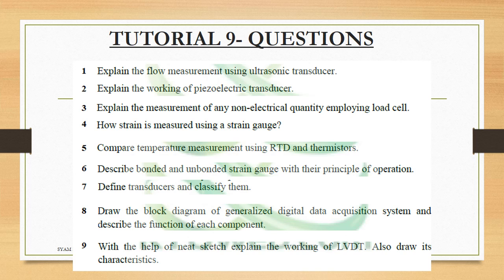Another question is regarding RTD and Thermistor comparison — RTD and Thermistor comparison is related to temperature measurement differences. The next question is on bonded and unbounded strain gauge. Then the 7th question is: Define transducer and classify them. This is from the 6th module starting topic — different types of transducers.